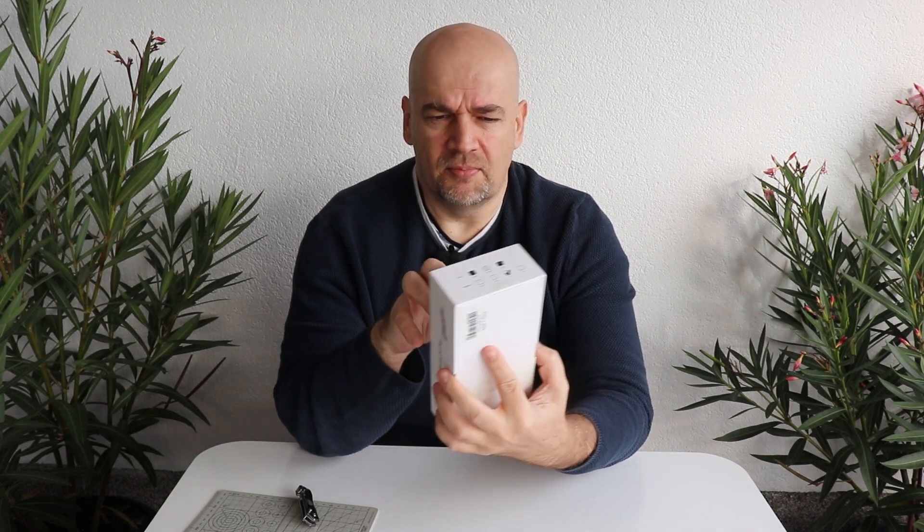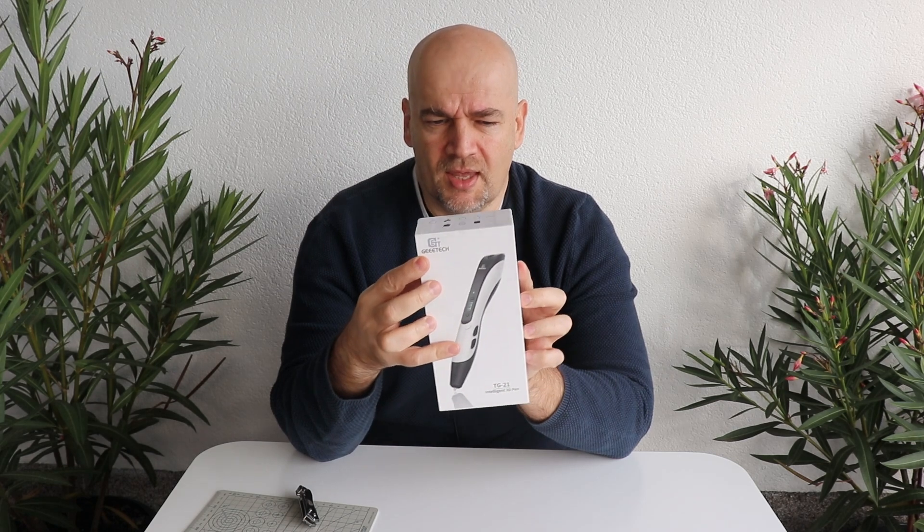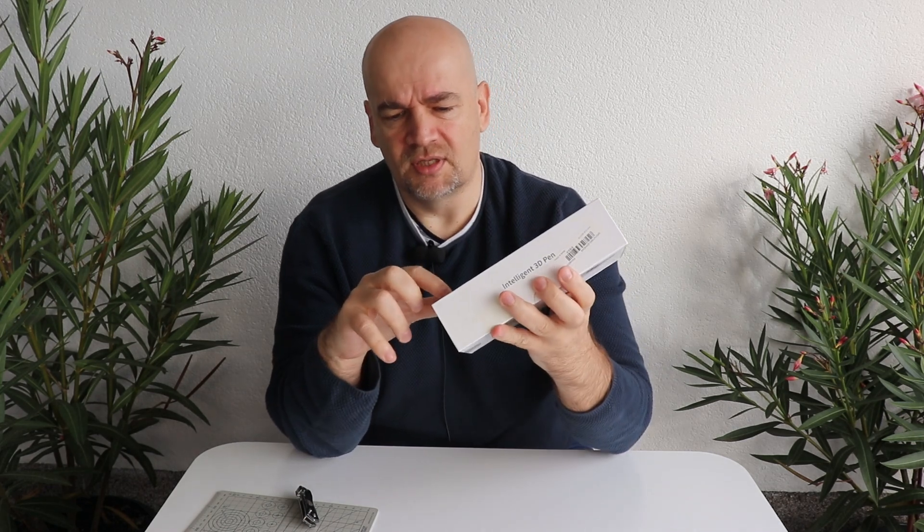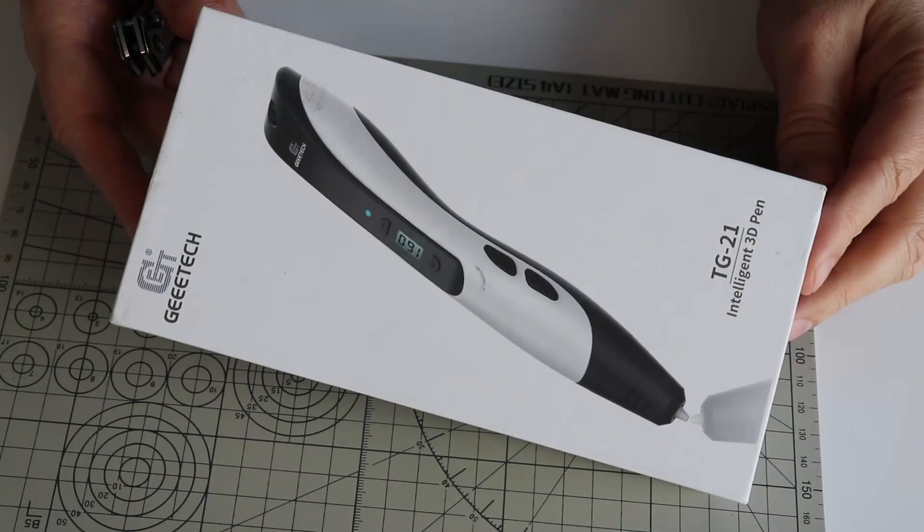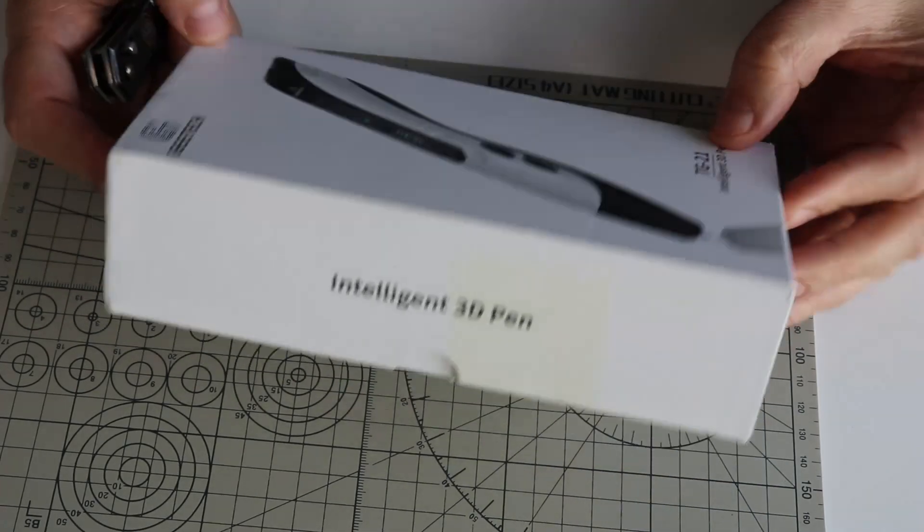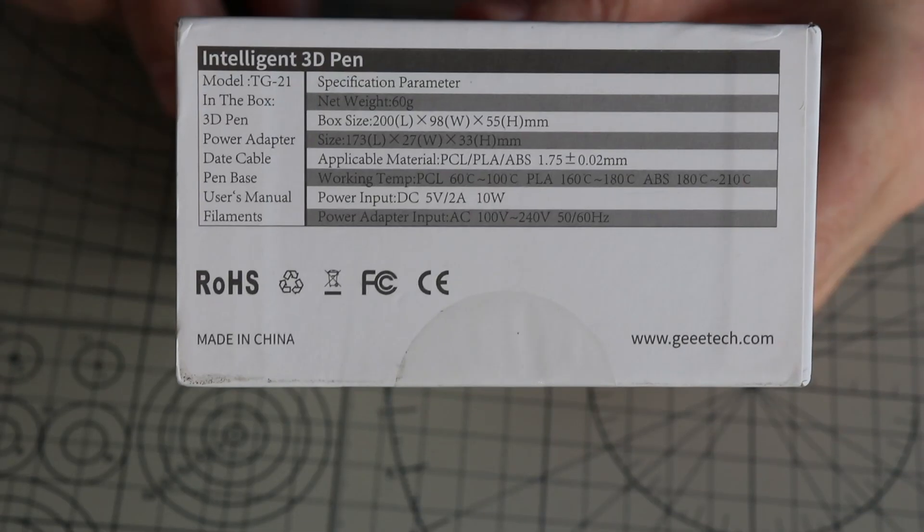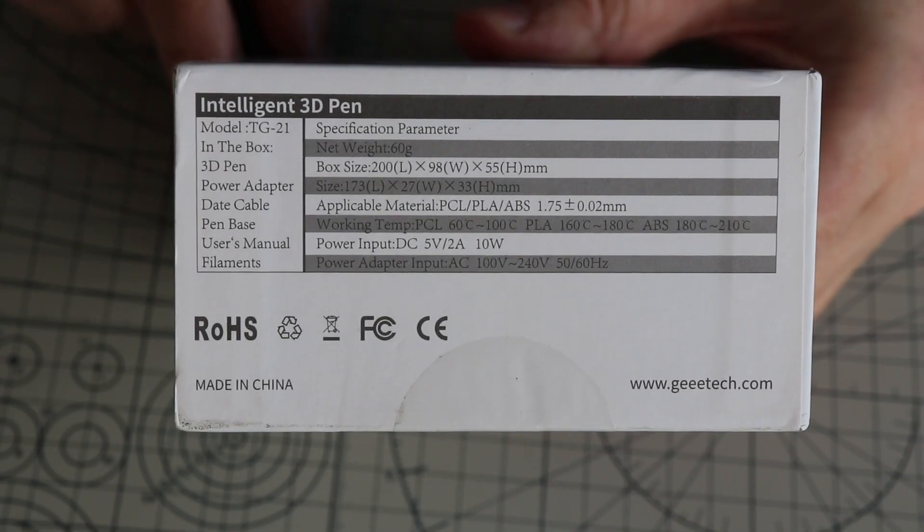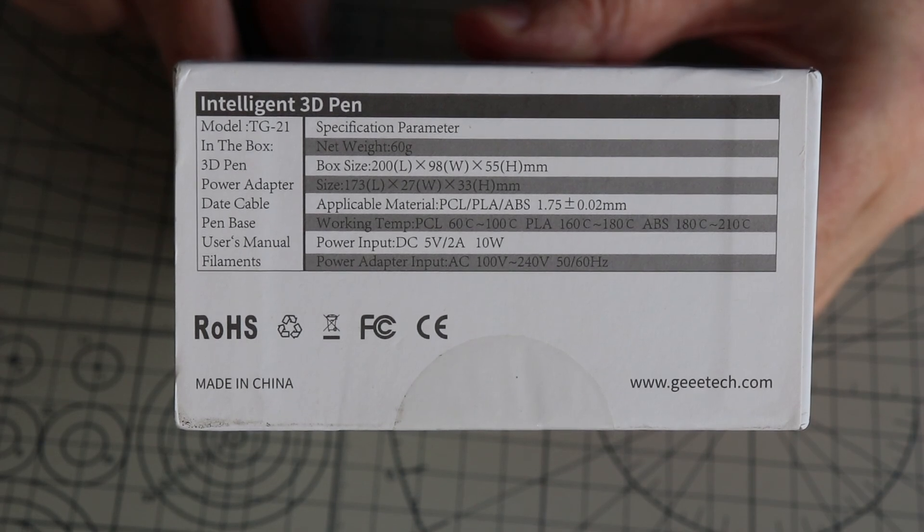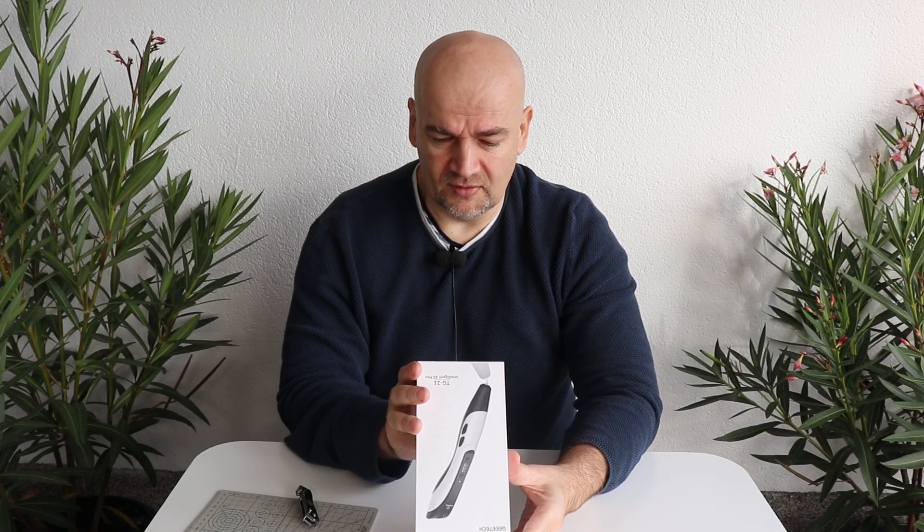This is the 3D print from G-Tech and this is the version TG21. On the box not much information. Maybe one useful information it can be used with PCL, PLA and ABS. I wasn't even sure what is the PCL but it is a material which can be melted on very low temperature. And on the box I can see between 60 and 100 degrees Celsius is the melting working temperature.